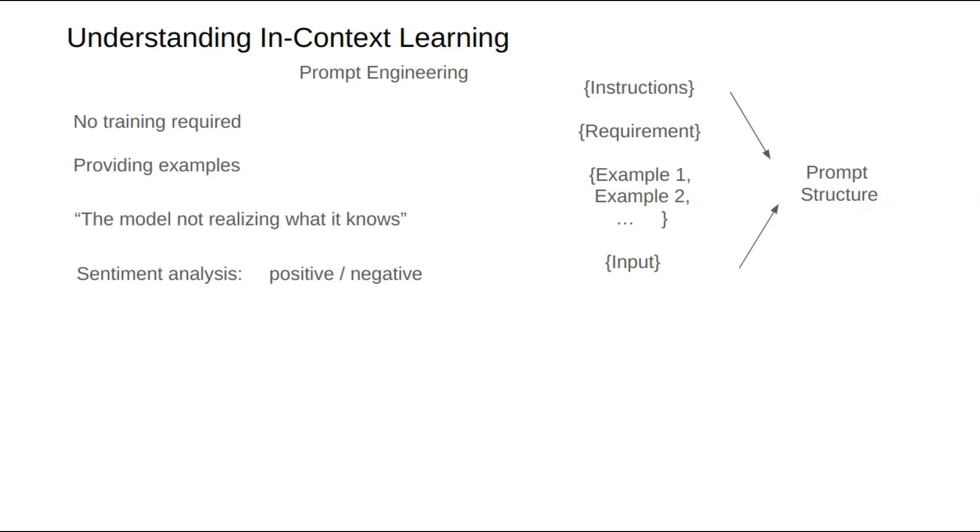First, instruction—telling the model what to do. Second, requirements—specifying how the task should be performed. Third, examples—providing one or more examples to illustrate the task.